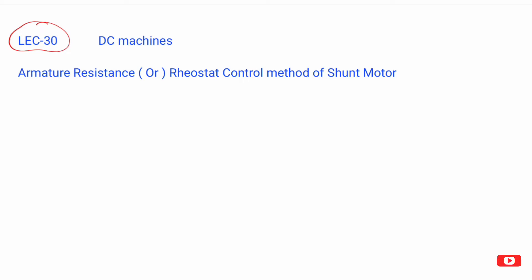Coming to subject DC machines — armature resistance or rheostat speed control method. Already we have covered DC shunt motor field control method and DC series motor field control method. So this is the armature resistance or rheostat speed control.